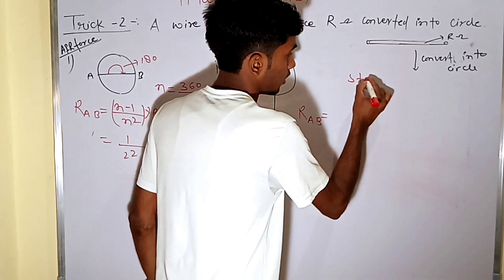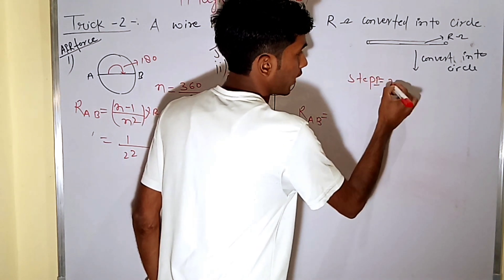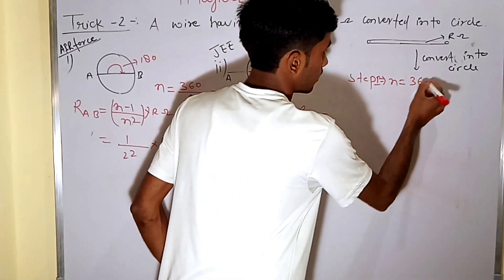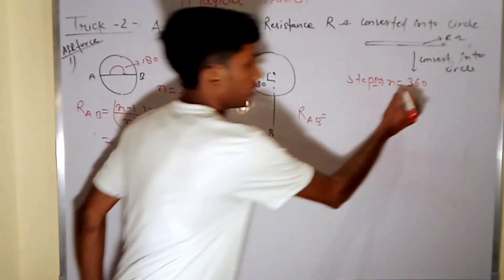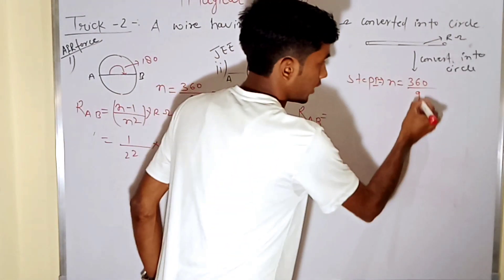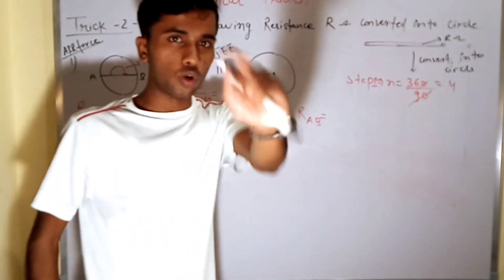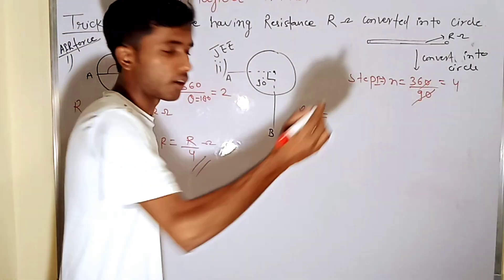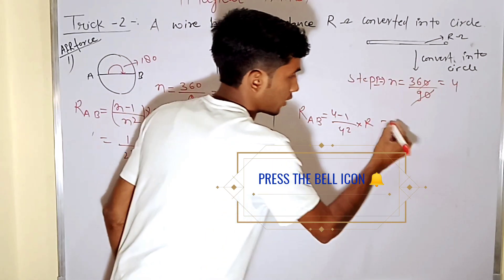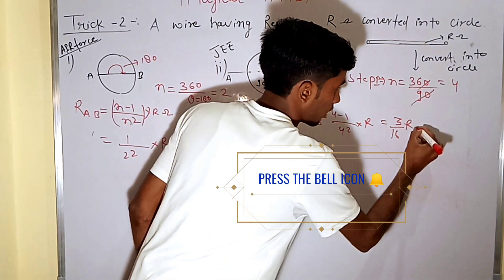First, step 1: find n. So n equals 3/16. Theta — divide by theta — how much? 90. So n equals 4. The formula gives us: n minus 1 upon n squared into R, which is 3/16 R.